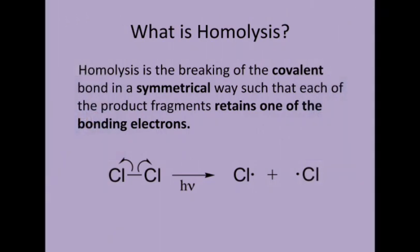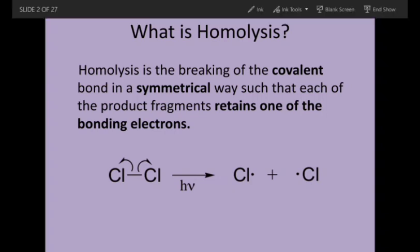What is homolysis? Homolysis is the breaking of the covalent bond in a symmetrical way such that each of the product fragments retains one of the bonding electrons. We can see in the chlorine molecule, when the homolysis is taking place, the bond breaks. A bond means two electrons. In presence of photochemical energy, this bond breaks in a symmetrical way.